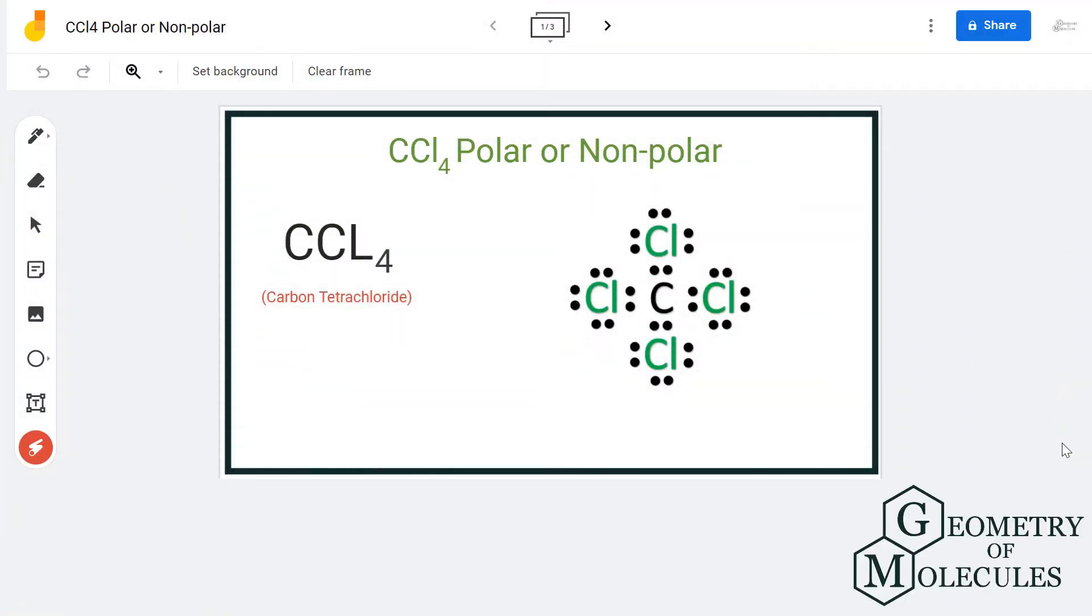Hi guys, today in this video we are going to determine the polarity for CCl4 molecule, the chemical formula for carbon tetrachloride. To determine its polarity, we will first go through its Lewis structure and shape.